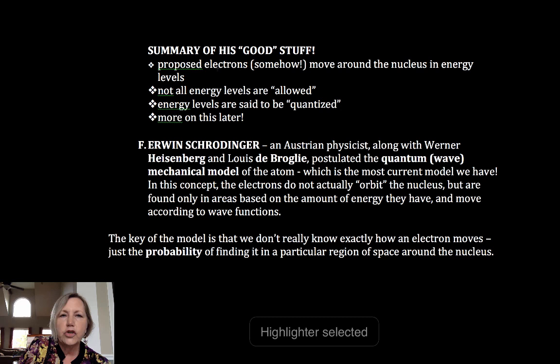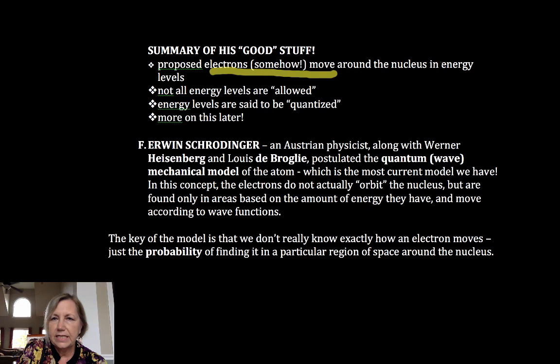Electrons move somehow. We don't know how, but they move around the nucleus. And this is key, in energy levels. Not all energy levels are allowed. Energy levels are said to be quantized. And more on that in another video.